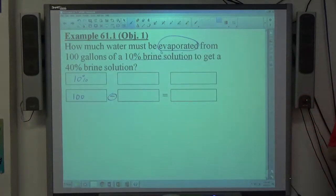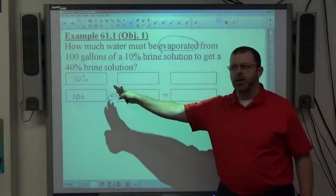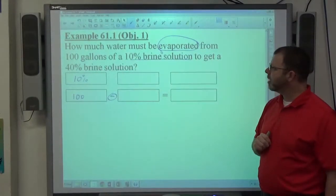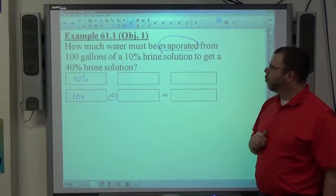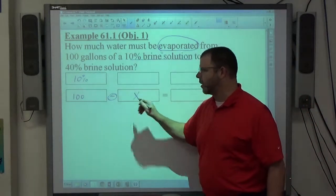Okay, the problems we solved before in this category, we always started off with knowing this amount over here. We didn't know either of these. Now we're starting off with one where we know the initial amount. Next, how much water must be evaporated? Okay, so we're taking away some unknown amount of water.